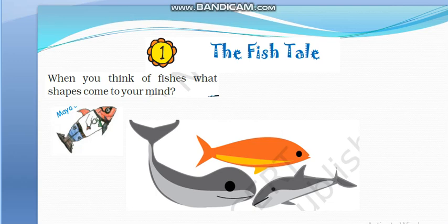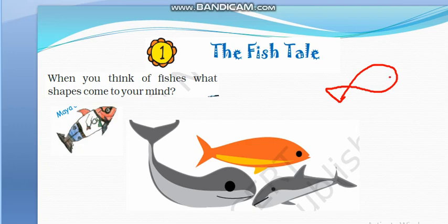Students, I know you have seen many fishes of many sizes and many types. Fishes live in water. When you think of fishes, what shapes come to your mind? Such types of shapes will come in your mind when you think about fish. Here, in the picture, you can see 4 fishes — 1, 2, 3, 4 — of different sizes. We can see this is the smallest fish among these 4 fishes and this is the biggest fish.